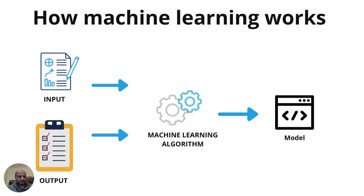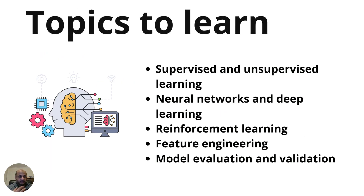With machine learning it's different. You give it the input and the output together, the algorithm processes that data and creates a model, and this model is used to make future predictions. For example, with image recognition software for cats and dogs, you feed it pictures of cats and dogs as input, label them as output, it builds a model, and that model can then recognize cats and dogs in new pictures — because it has learned from that data.